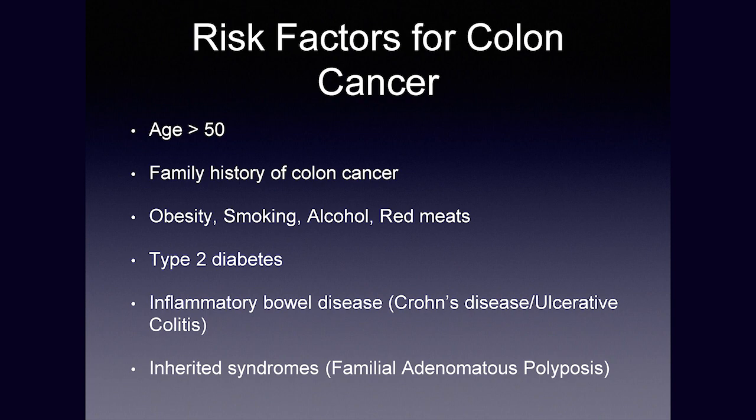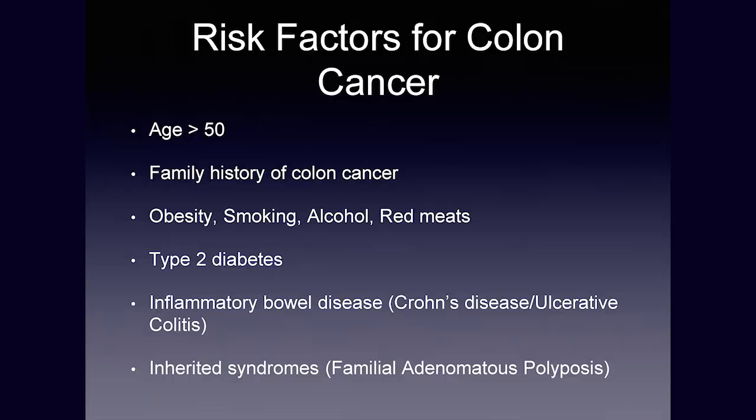Most people probably know a friend or relative who's had Crohn's disease or ulcerative colitis. There are also some rare inherited syndromes — familial adenomatous polyposis — where there's essentially a carpet of polyps in the colon, and those people typically need to have their whole colon taken out.